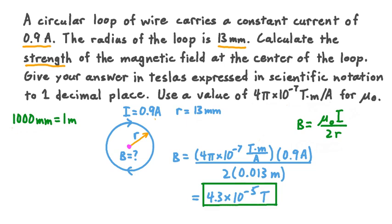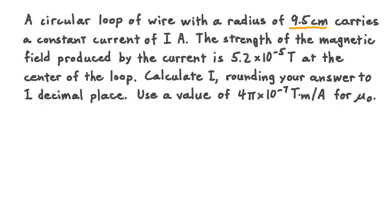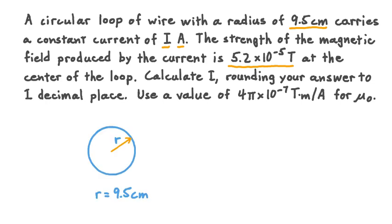Let's look at one last example. A circular loop of wire with a radius of 9.5 centimeters carries a constant current of I amperes. The strength of the magnetic field produced by the current is 5.2 times 10 to the negative 5th teslas at the center of the loop. We are given R of 9.5 centimeters, and field magnitude B equal to 5.2 times 10 to the negative 5th teslas, using mu-naught equals 4 pi times 10 to the negative 7th tesla meters per ampere.